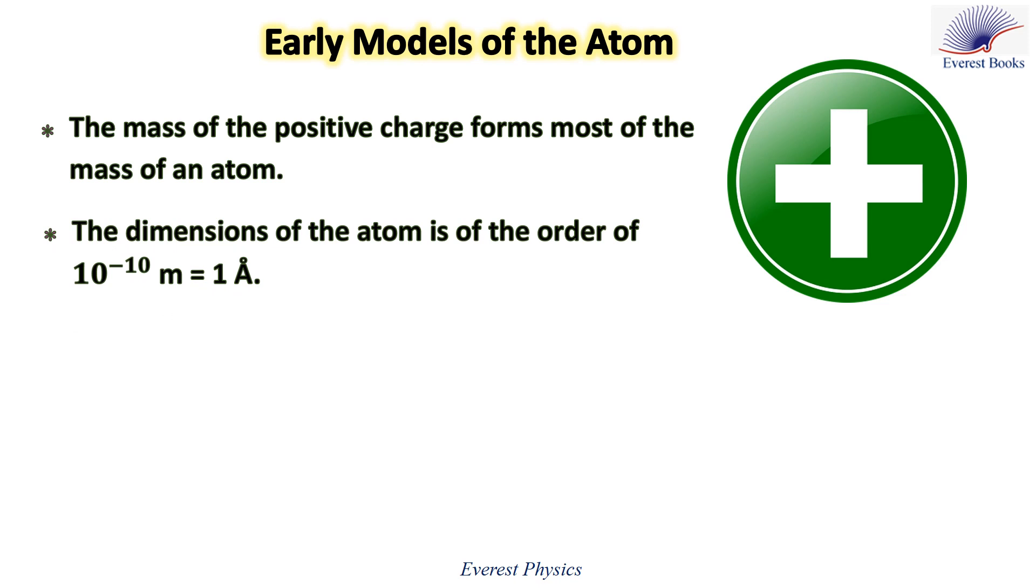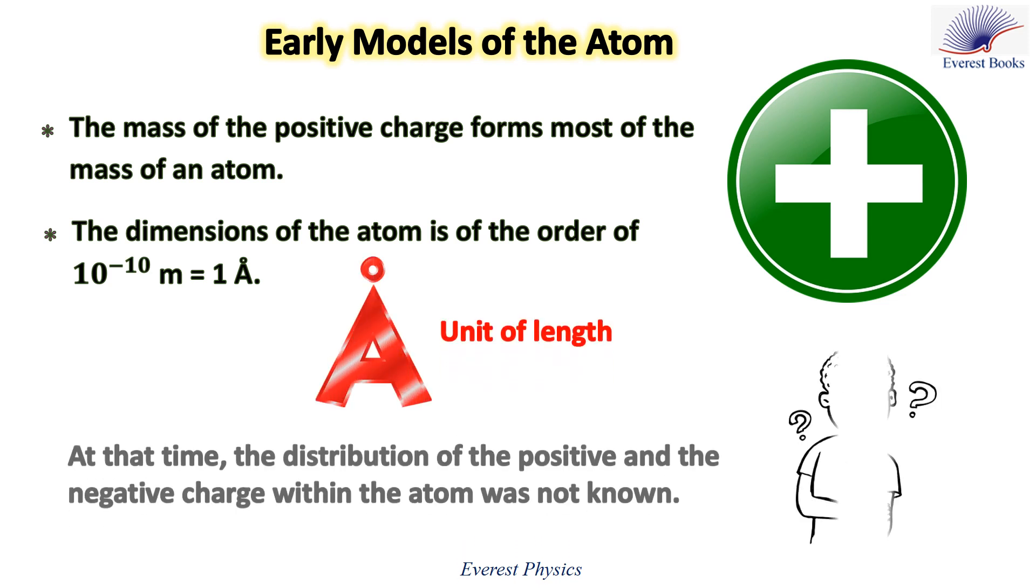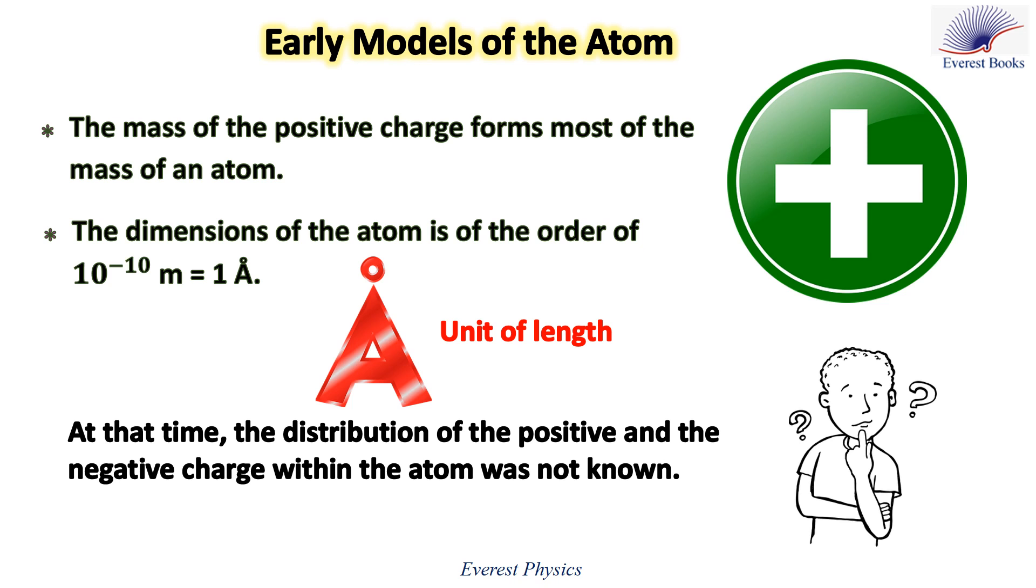The dimensions of the atom is of the order of 10 to the power minus 10 meters, which is equal to 1 angstrom. Angstrom is a unit of length. At that time, the distribution of the positive and the negative charge within the atom was not known.